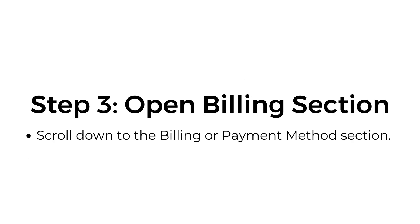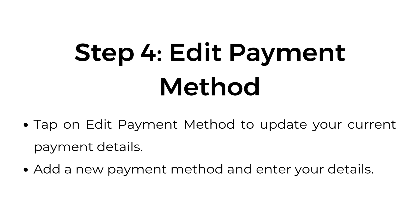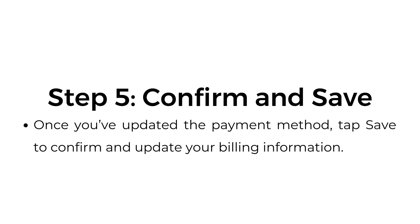Step number three, open the billing section. Scroll down to the billing or payment method section. Step number four, edit payment information. Tap on edit payment method to update your current payment details and add a new payment method by entering your details. Step number five, confirm and save. Once you've updated the payment method, tap save to confirm and update your billing information.